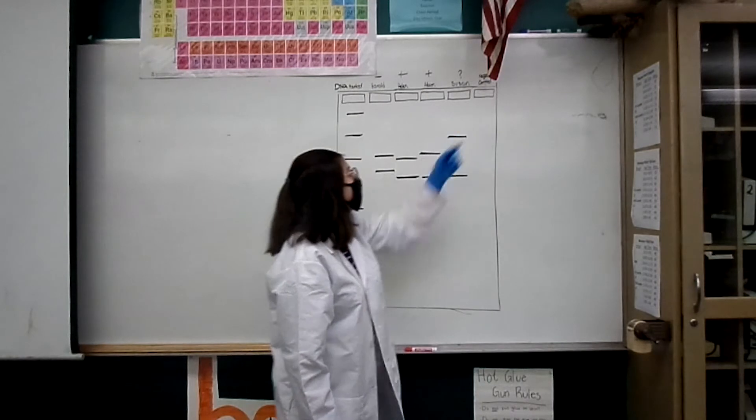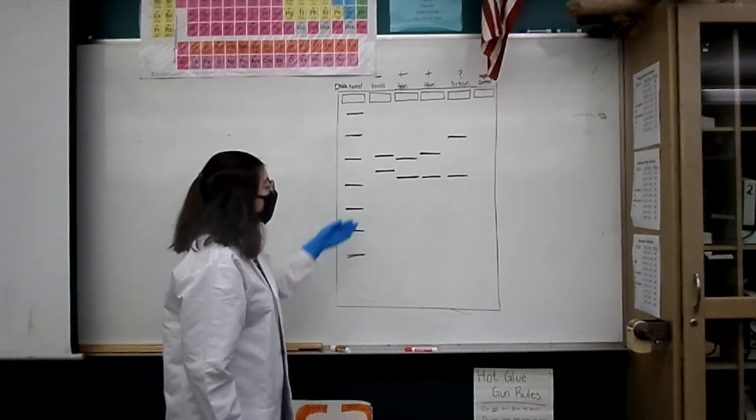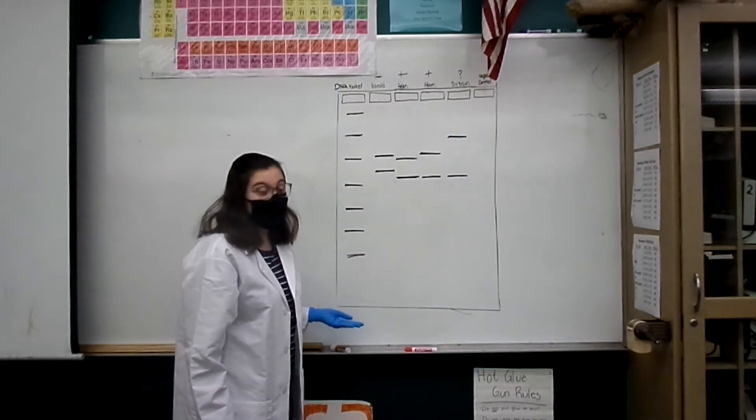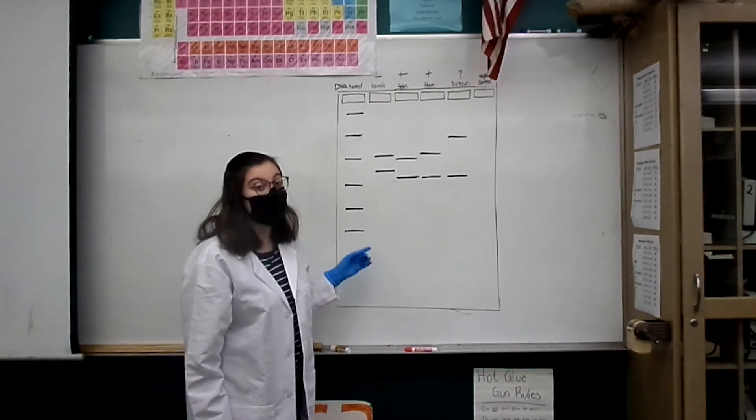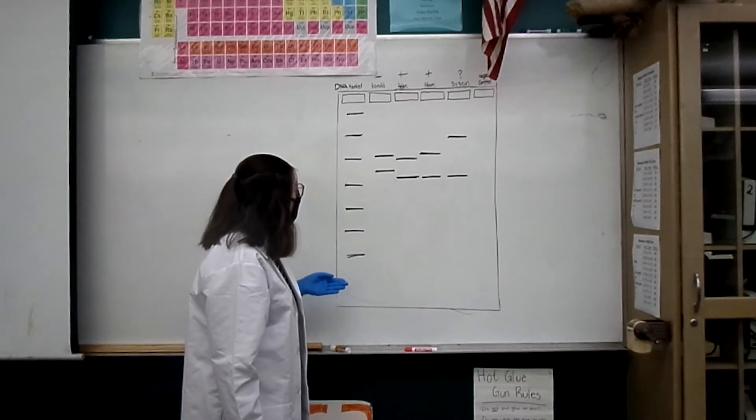You can see here that the pieces of DNA move down towards the positive side, and because they are different lengths, they move down at different speeds, the smaller pieces moving down faster or further.